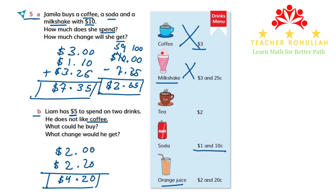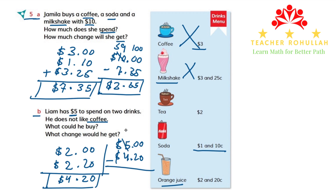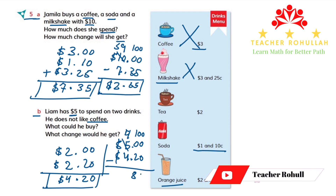Now it says how much change will he get? To find how much change he gets back, we have to subtract $4.20 from $5. So $5 minus $4.20. To easily subtract, we give a decimal point and two placeholder zeros to the right of $5. 20 cents cannot be subtracted from zero cents, so we borrow from $5. $4 will be left here and we will have 100 cents. We know that $1 is equal to 100 cents. So 100 cents minus 20 cents equals 80 cents, and $4 minus $4 is $0.